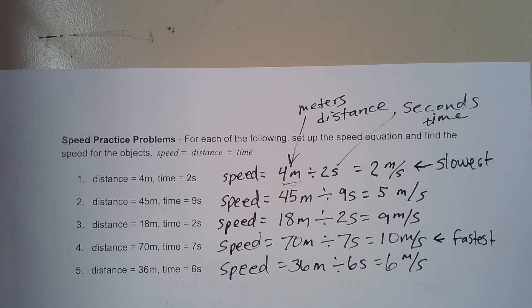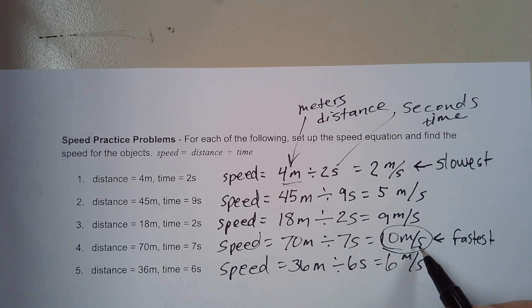But look at the speed and think of it this way. If you are in a car, if you're going 70 miles per hour, you're going faster than if you go 30 miles per hour. So the higher the number of speed with your unit speed, that's the faster object.